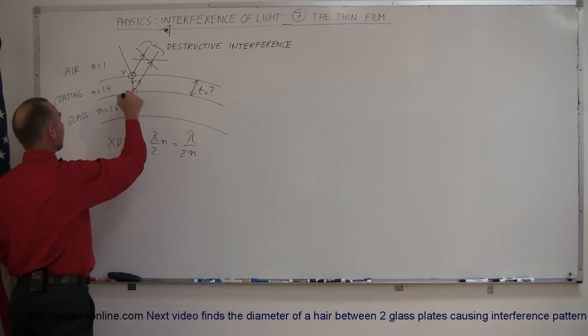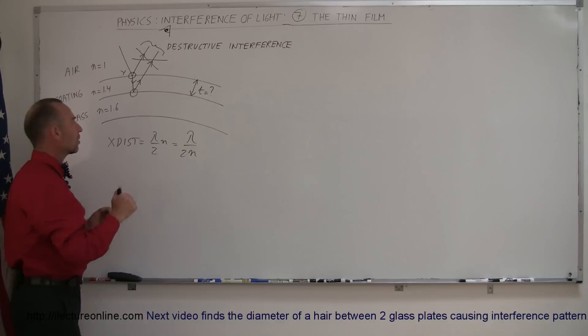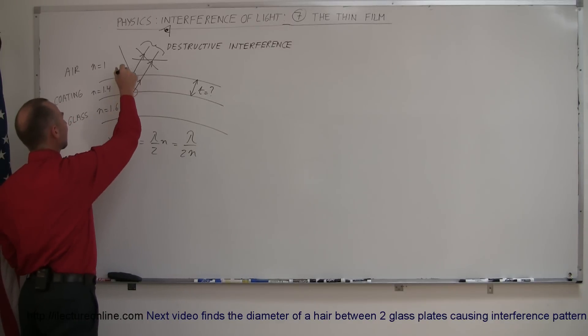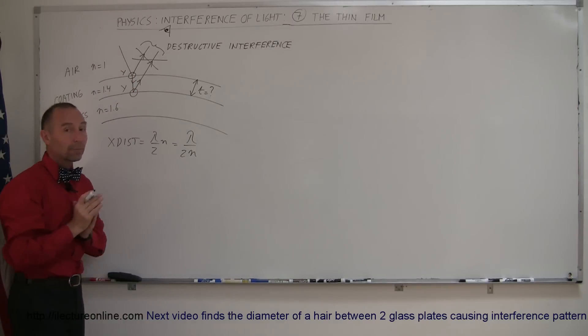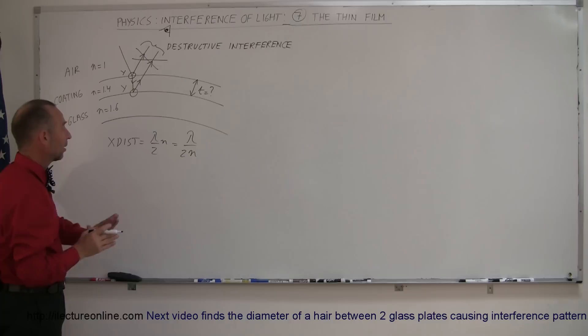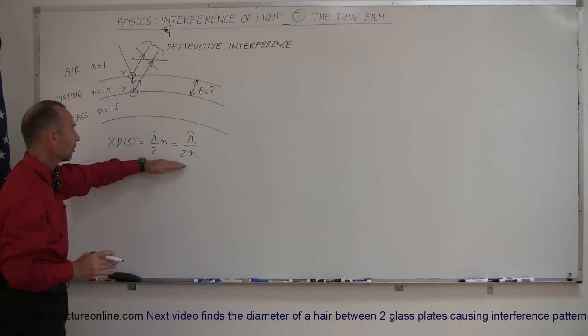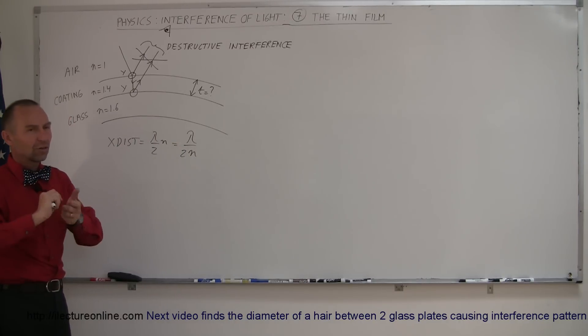And at the second boundary, again, since you're going from 1.4 to 1.6, there must also be a phase shift there, and if you have a phase shift that's the same on both boundaries, then we can just ignore it, and so the extra distance traveled is equal to lambda over 2n. There isn't an extra half wavelength of phase difference due to differences in the phase shift at the boundaries.